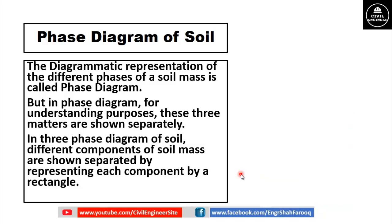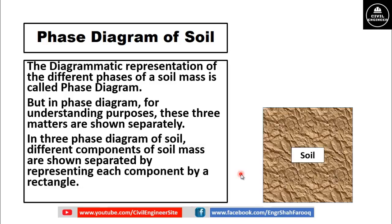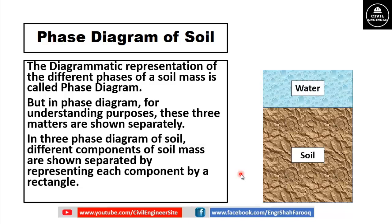Now we will show the three constituents — soil solid, air, and water — of the soil mass by rectangles. This is soil solids, the next one is water, and the other is air.